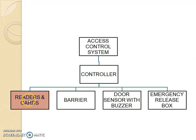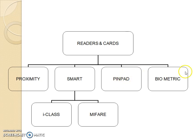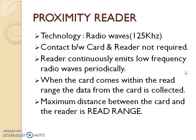The readers and cards are part of the access control systems. There are a variety of readers and cards, like proximity card, smart card — and within the smart card you will see iClass and MyFare. There are also systems which are part of access control like pin pad and biometric devices, which we will see in the continuing lecture.